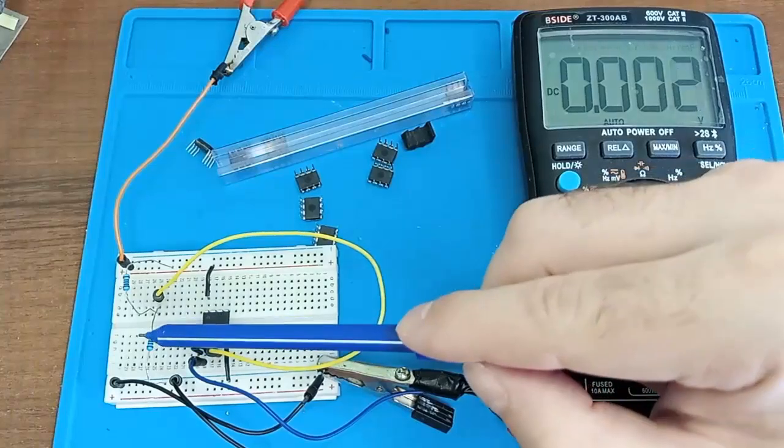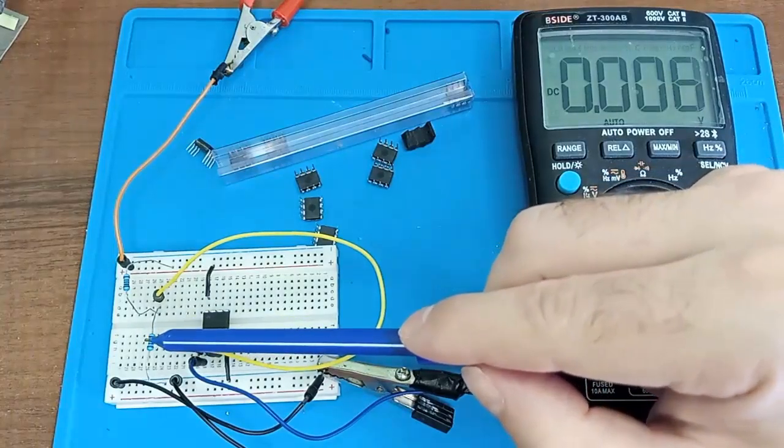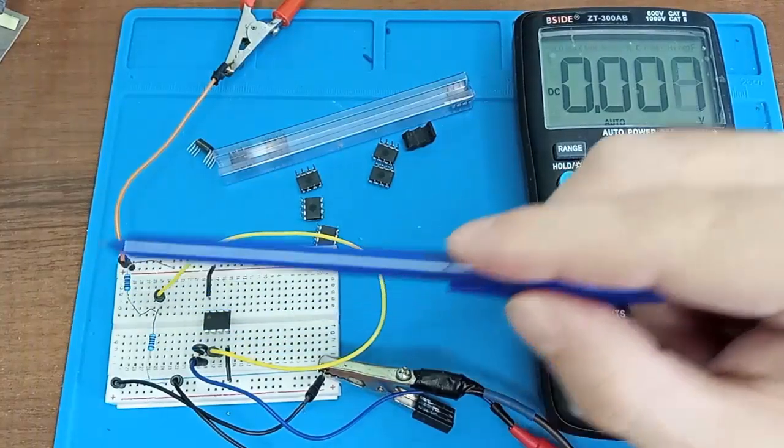I have them here on the board. This is a one kiloohm resistor. Here's one. Here's the second.